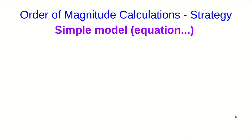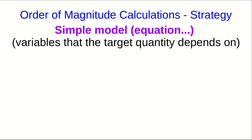Here's the general process. You start with some sort of a simple model. You want a simple equation and in particular you're interested in knowing what variables the target quantity that you're trying to find depends on.